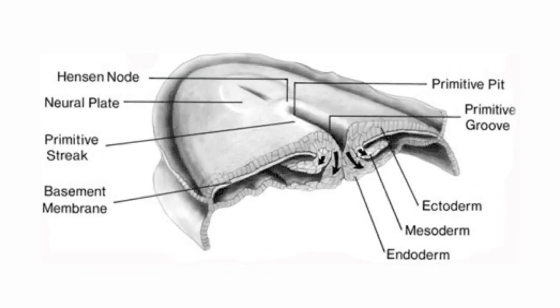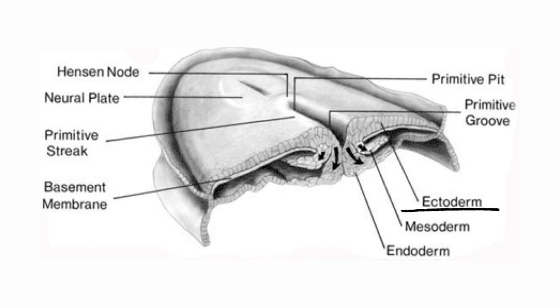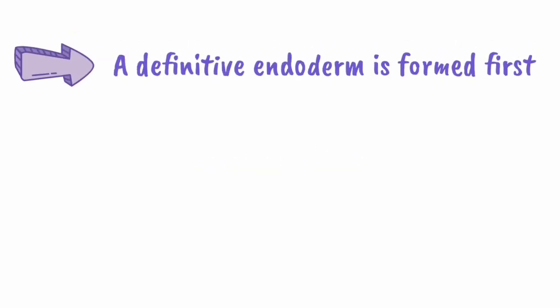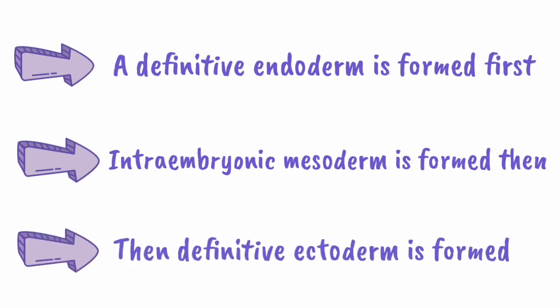Cells from the primitive streak continue to proliferate and replace the epiblast cells to form the definitive ectoderm. So in the process of gastrulation, first a definitive endoderm is formed, then the intraembryonic mesoderm is formed, and finally the definitive ectoderm is formed.